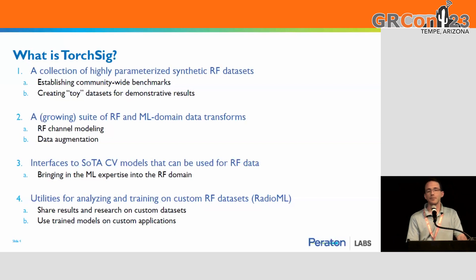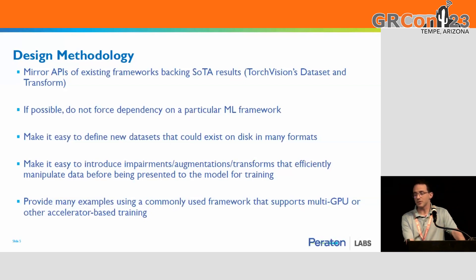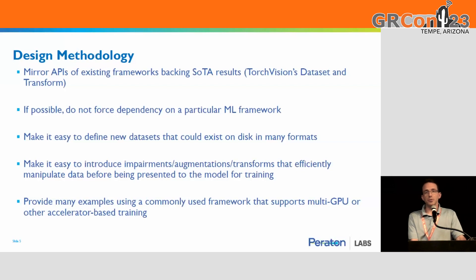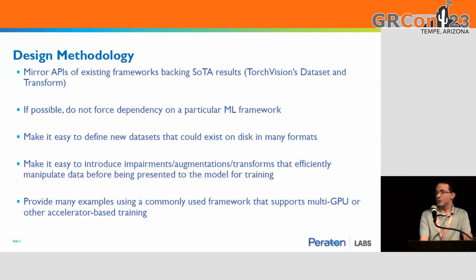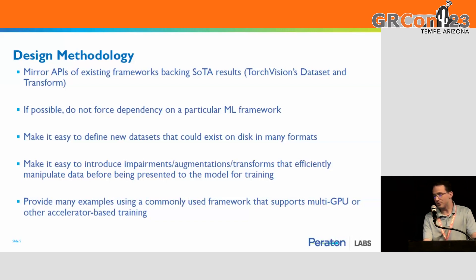Utilities for bringing in your own dataset are also included. When designing this, we wanted to resemble as closely as possible the TorchVision and TorchAudio APIs, so those familiar with ML research in those communities could come and try their networks in the RF domain. We tried not to focus on a specific ML framework — TensorFlow and PyTorch are two big ones, but there are others. The goal was to make it easy to use new datasets, bring in your own impairments, write your own channel model, and provide as many examples as possible.